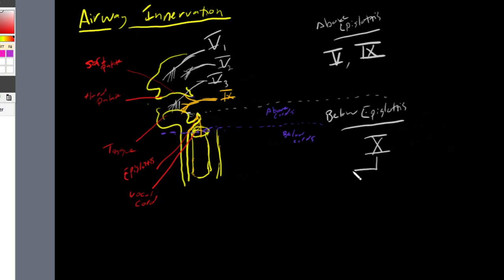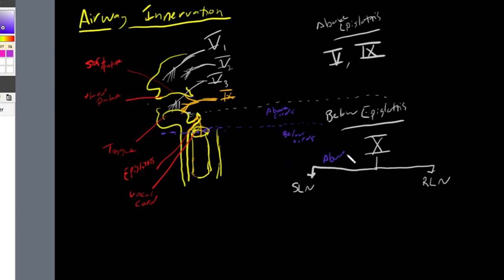Our vagus nerve, cranial nerve 10, splits into two different branches: the superior laryngeal nerve and the recurrent laryngeal nerve. As you can probably now guess, that is the big reason why I separated the vocal cords into above and below. Everything above the vocal cords will be dealt with by the superior laryngeal nerve, and everything below our vocal cords is going to be dealt with by our recurrent laryngeal nerve. This is an oversimplification, but it's a good rule of thumb — above cords: superior laryngeal nerve; below cords: recurrent laryngeal nerve.